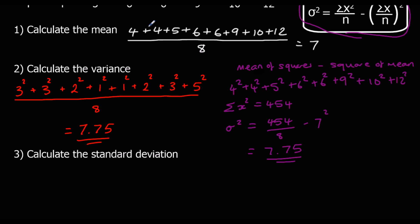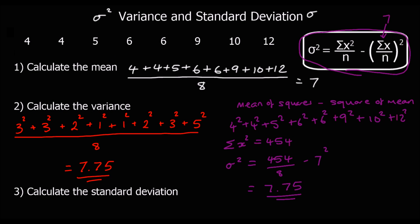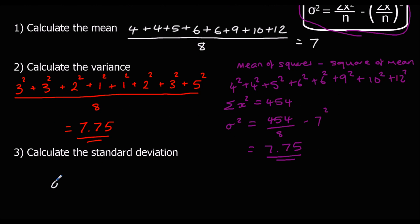To calculate the standard deviation: standard deviation is the square root of variance. Variance is sigma squared, standard deviation is just sigma. So the standard deviation is the square root of 7.75, which to 3 significant figures is 2.78.